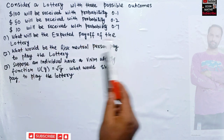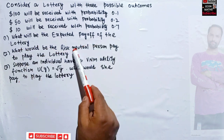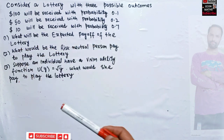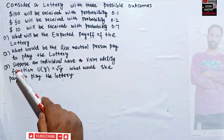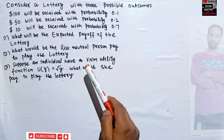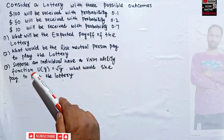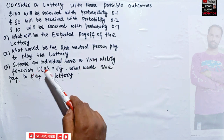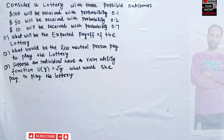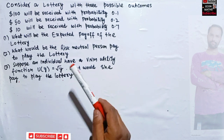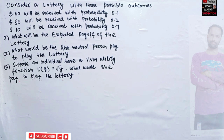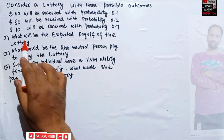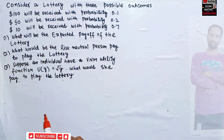The second part asks: what would a risk neutral person pay to play the lottery? And suppose an individual has a VNM utility function u(y) = √y, where y denotes wealth — what would she pay to play the lottery? Let's try to solve this question, starting with the expected payoff.